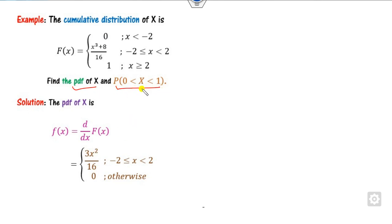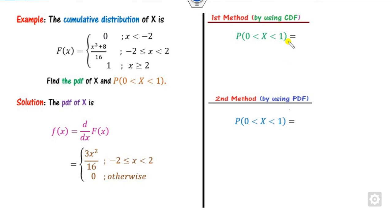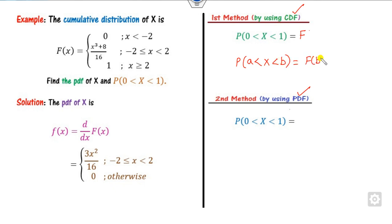Now, how can you find the probability? We describe two methods: one using the CDF and one using the PDF. When using the CDF, remember this rule: P(a < X < b) = F(b) − F(a), that is upper minus lower. For a continuous random variable, equality does not matter, so both values are the same.